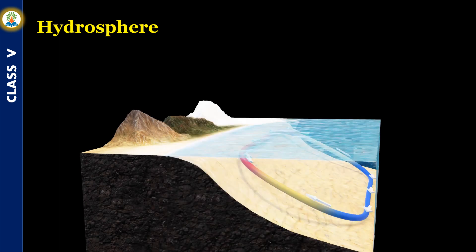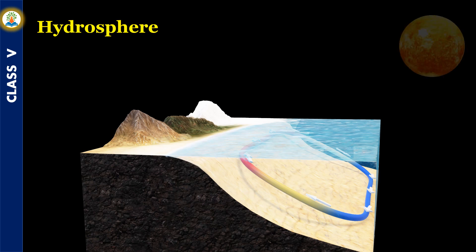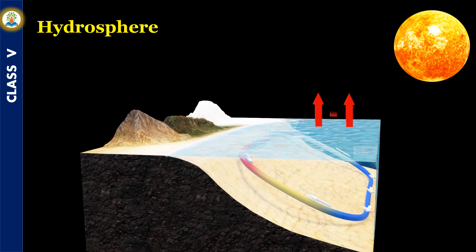Water on Earth is always moving. Water constantly changes its form due to evaporation, condensation, and precipitation. During the daytime, the sun's rays heat up the water from water bodies such as rivers, lakes, and oceans, changing it to water vapor that rises up into the atmosphere. This process is known as evaporation.